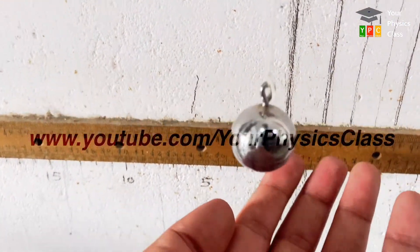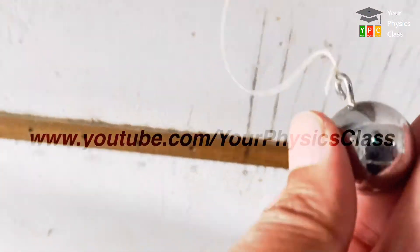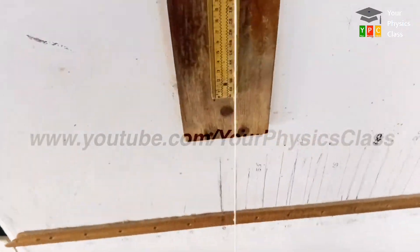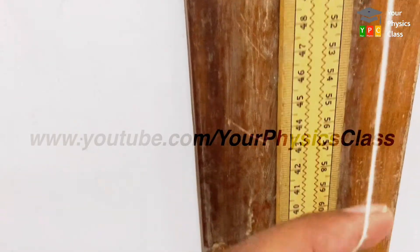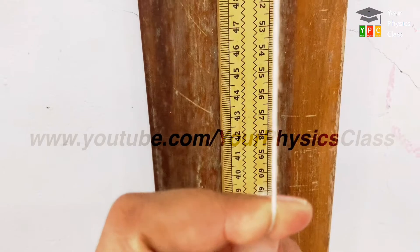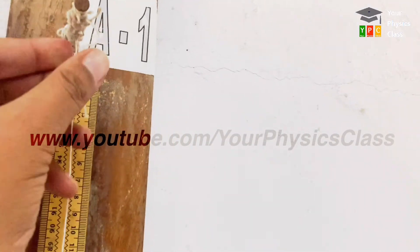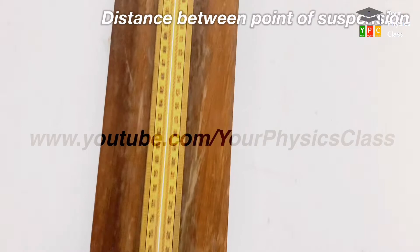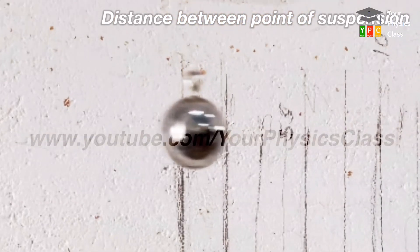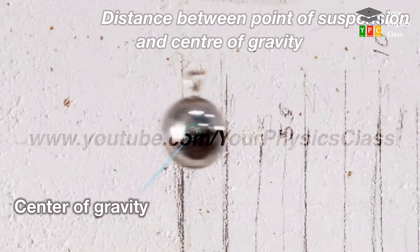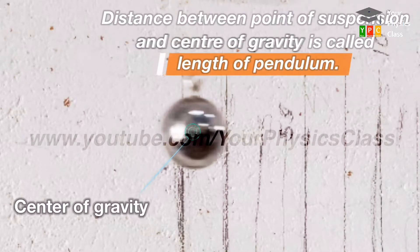A practical simple pendulum is a small heavy sphere suspended by a light and inextensible string from a rigid support. The distance between the point of suspension and the center of gravity of the bob is called length of the pendulum.